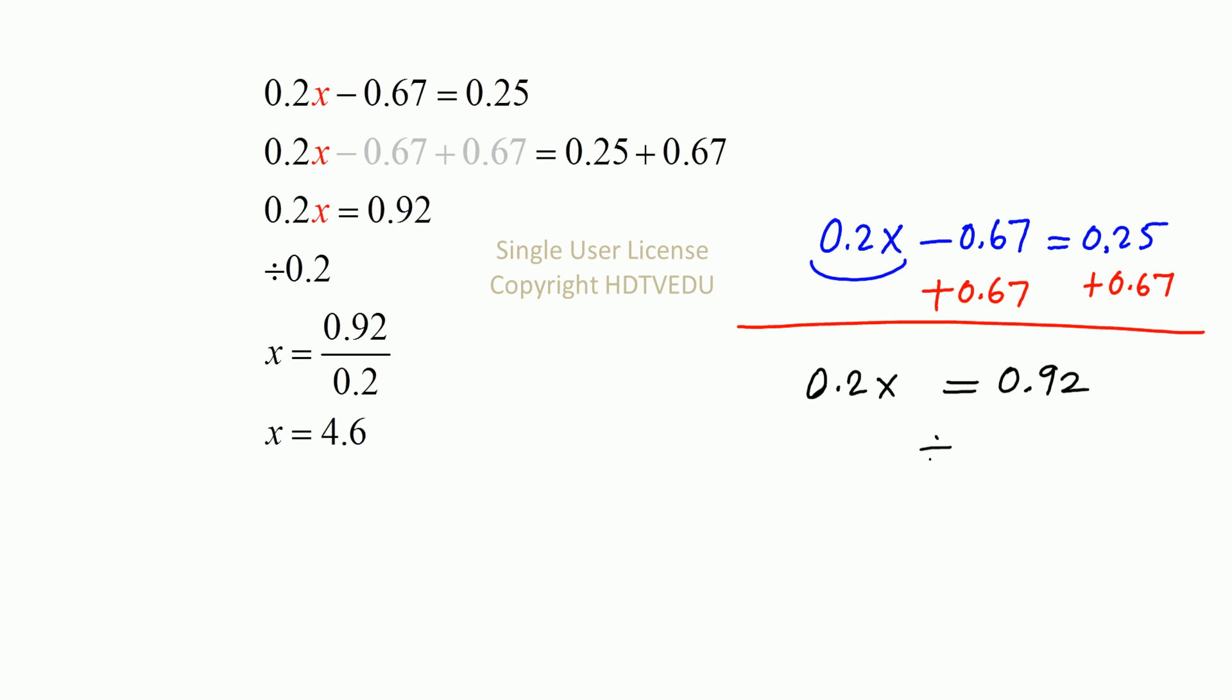Now, you divide both sides by 0.2 and what do we get? 0.2x divided by 0.2 is equal to 0.92 divided by 0.2, and so we get x equals 4.6.